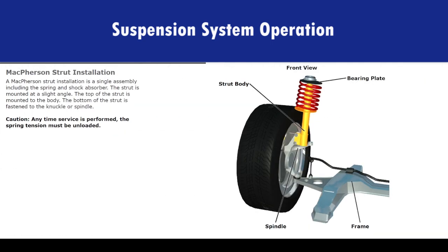A McPherson strut installation is a single assembly, including the spring and shock absorber. The strut is mounted at a slight angle. The top of the strut is mounted to the body, and the bottom of the strut is fastened to the knuckle or spindle. Caution: anytime service is performed, the spring tension must be unloaded.